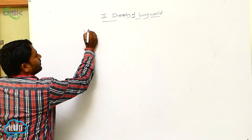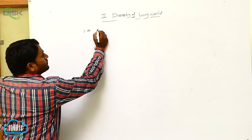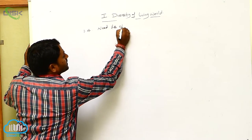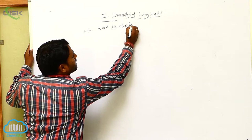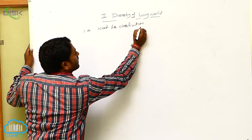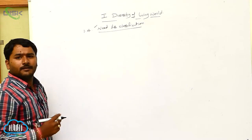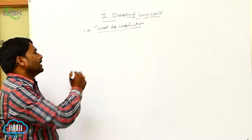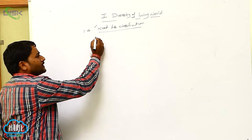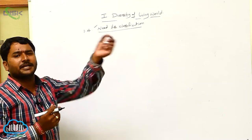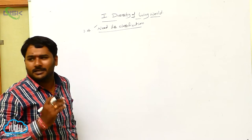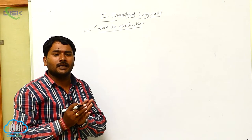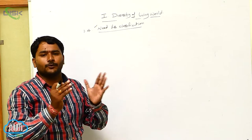Now we are going to discuss about the need for classification. If you take the living organisms on the earth, they are all of different types of groups.